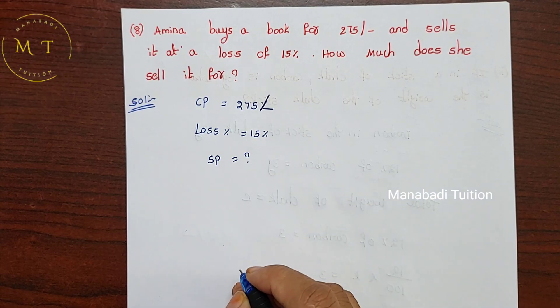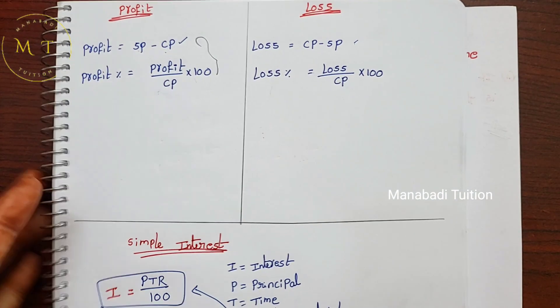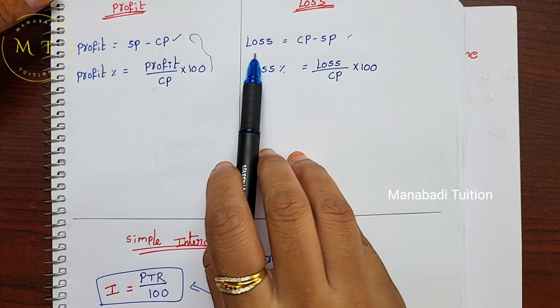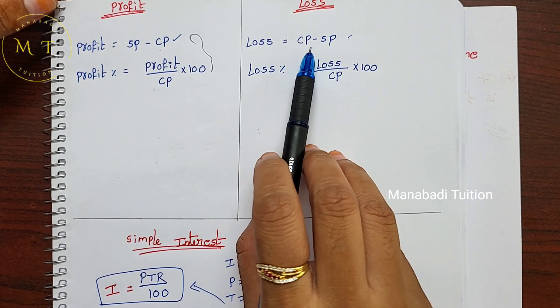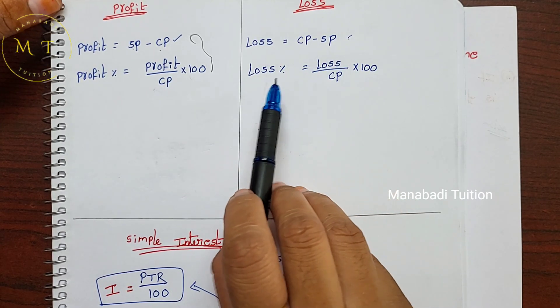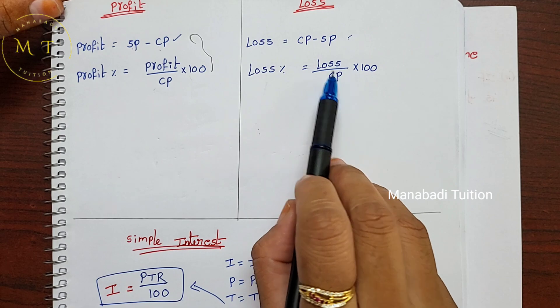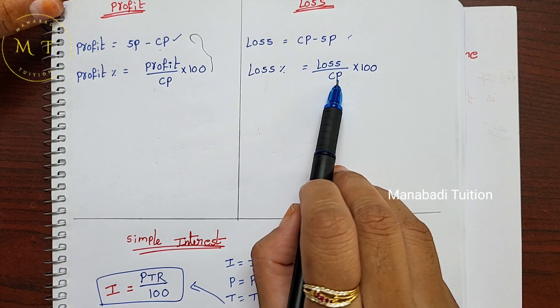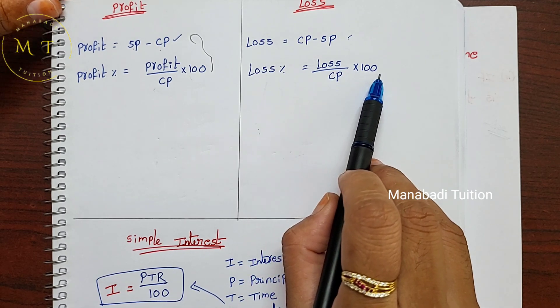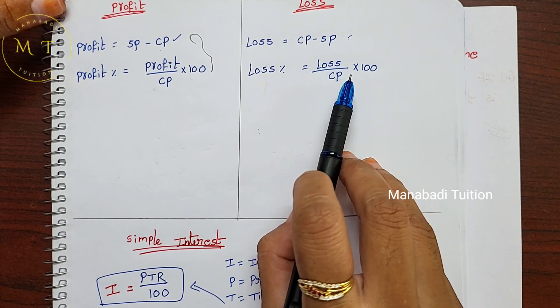We have two formulas for loss. Loss is equal to cost price minus selling price. And loss percentage is equal to loss divided by cost price, into 100. We will use these two formulas.